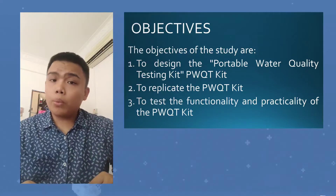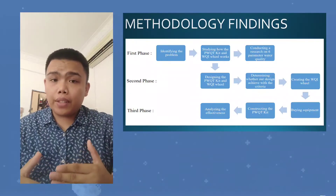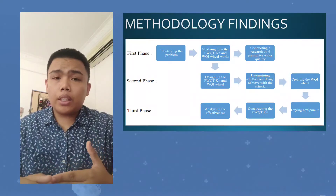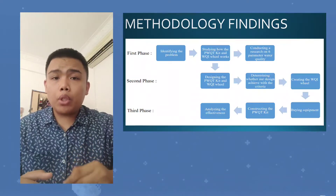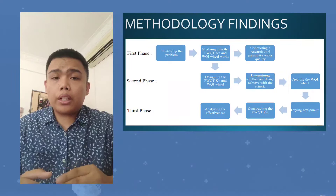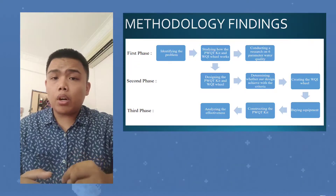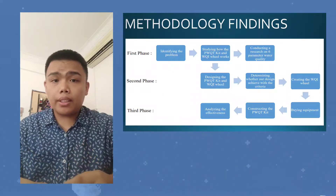Moving on to methodology. In the first phase, we first identified the problem, and then we studied how the PWQT kit and the WQI wheel works. We also conducted research about the 6 parameters of the water quality.